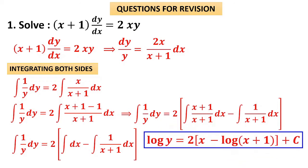The right-hand side is 2(x − log|x+1|) and the left-hand side is log y. This is the general solution, so we add plus c.